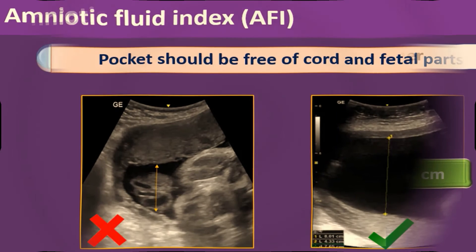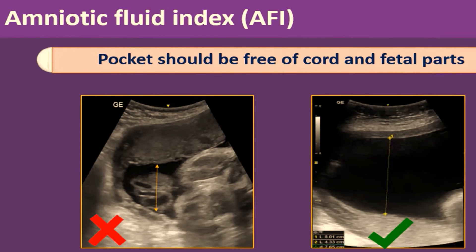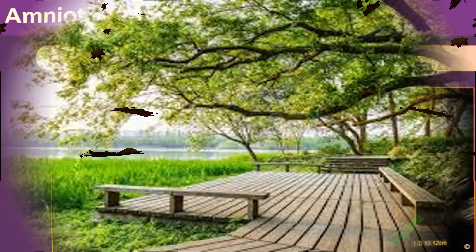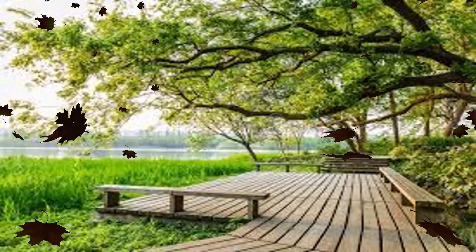There are some prerequisites for the amniotic fluid index assessment. First, the pocket should be free of cord and fetal parts. In this picture, the first example is wrong as it contains fetal parts or cord; the second picture shows only amniotic fluid, so that is the correct one. The second prerequisite is to measure the pocket vertically. The first picture shows an oblique view, which is wrong; the second picture shows the correct vertical measurement.